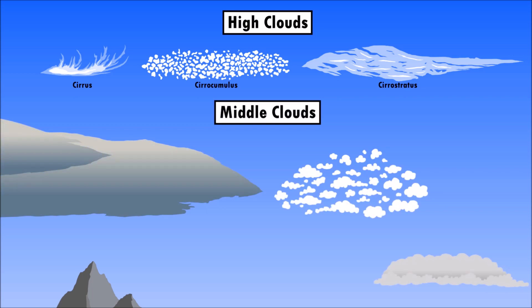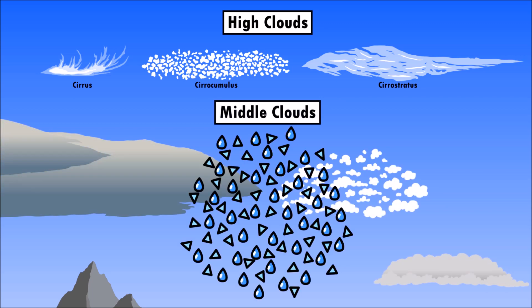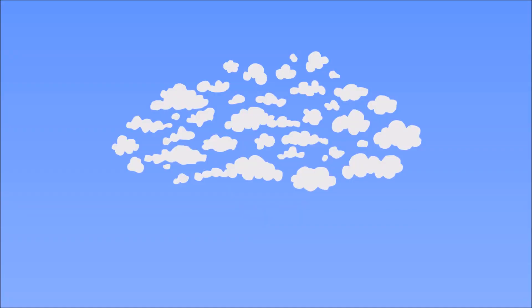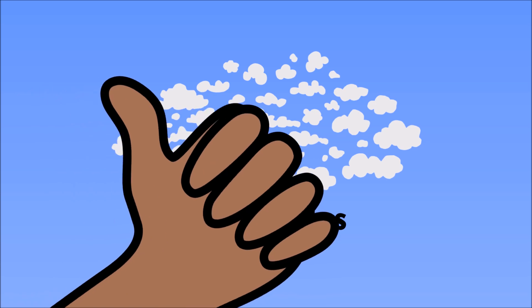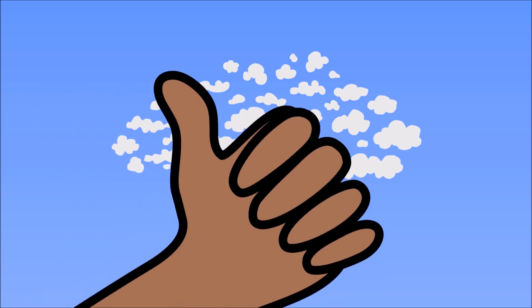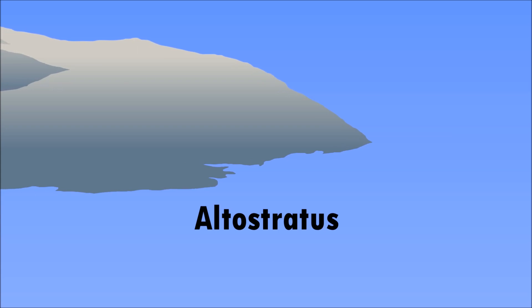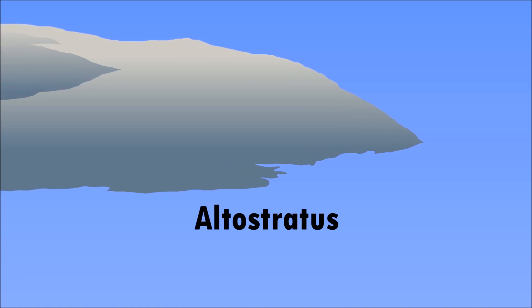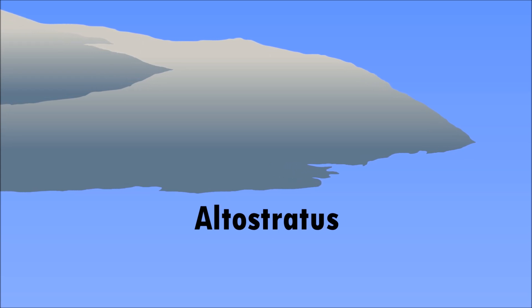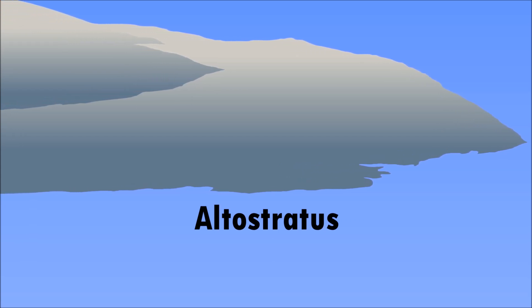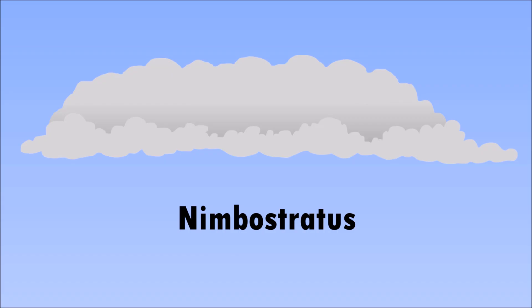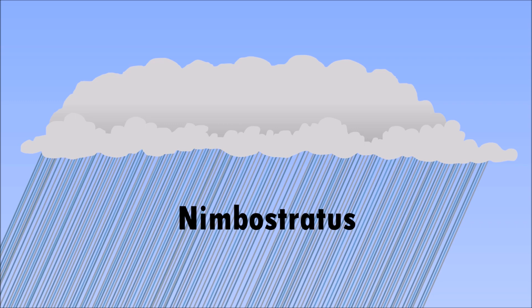Mid-level clouds are made from both ice and water. Middle clouds include altocumulus clouds, which are grayish white and dot the skies. Altocumulus clouds are about the size of your thumb and are gray or sometimes bluish gray, and will partially or even completely cover the sky. Nimbostratus clouds are a dark gray layer thick enough to block out the sun, and these clouds produce lots of rain or snow.